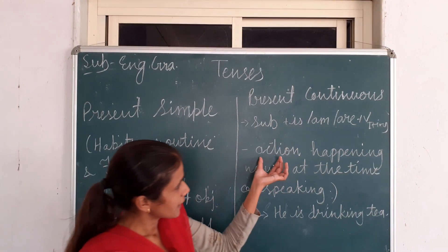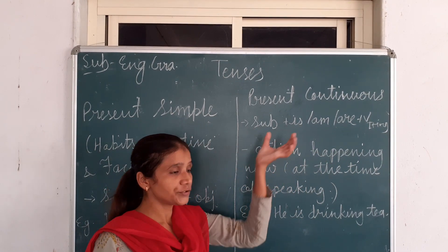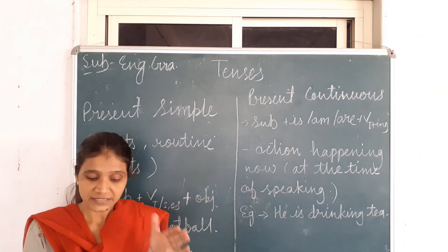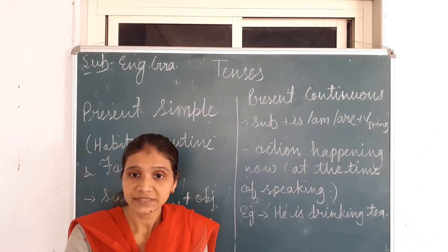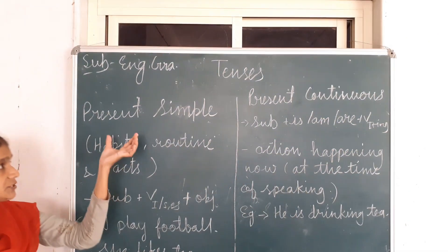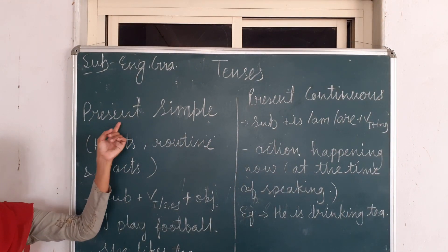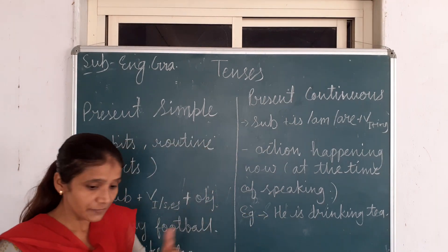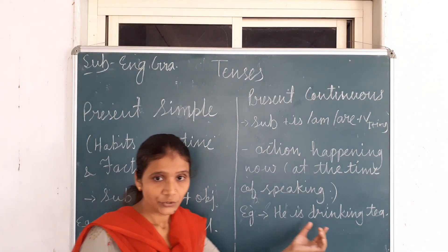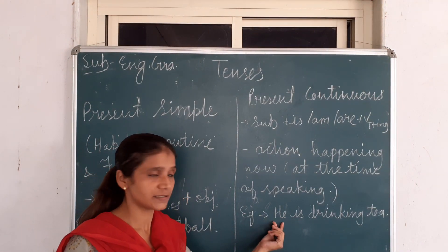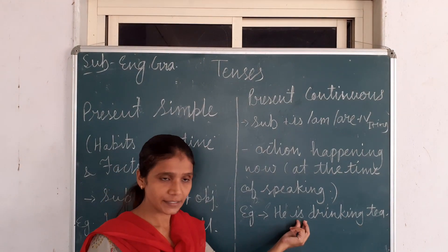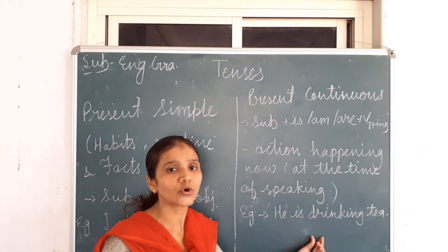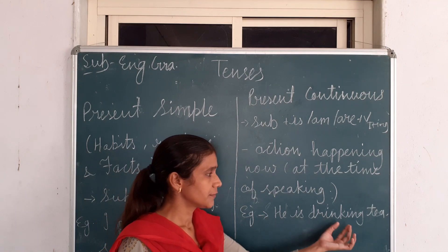Present Continuous Tense means actions happening right now, at the same time when we are speaking. For example, now I am teaching you — this is an example of Present Continuous Tense. 'I teach you English' is an example of Present Simple Tense. Example: 'He is drinking tea' — meaning at the time of speaking he is drinking. Because he is third person singular, we use 'is.' For negative: 'He is not drinking tea.'